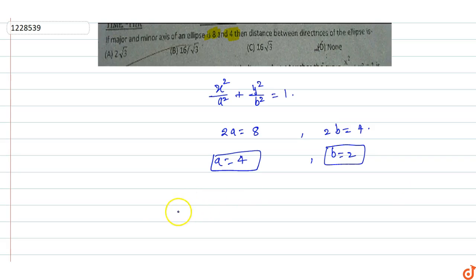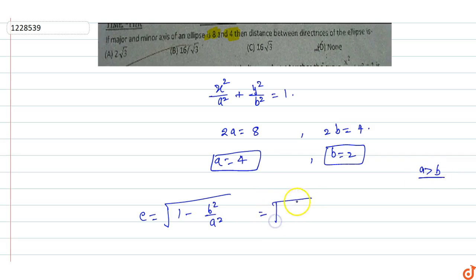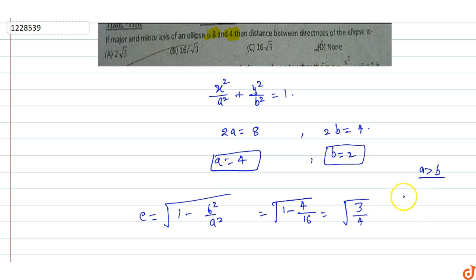Now we find the eccentricity of the ellipse. e = √(1 - b²/a²). Here b² = 4 and a² = 16, so e = √(1 - 4/16) = √(12/16) = √(3/4) = √3/2. The eccentricity of this ellipse is √3/2.